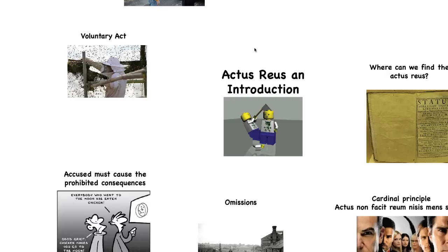Actus reus plus mens rea plus the absence of a defence equals criminal liability. We're going to look in depth now at what we mean by actus reus, certainly in depth enough for the A-level syllabus. The first thing is that actus reus is this notion of a guilty act.